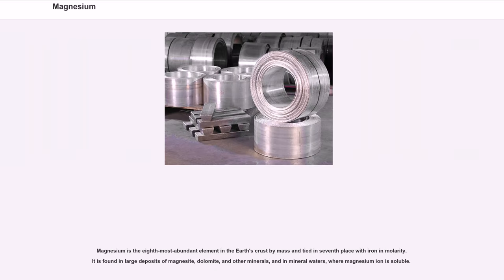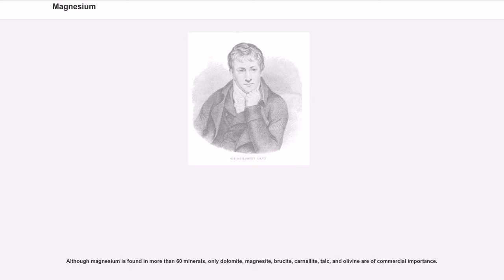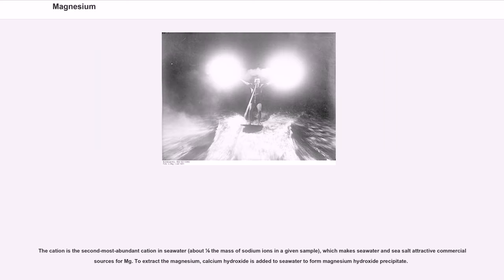Magnesium is the eighth most abundant element in the Earth's crust by mass. It is found in large deposits of magnesite, dolomite, and other minerals, and in mineral waters where the magnesium ion is soluble. Although magnesium is found in more than 60 minerals, only dolomite, magnesite, brucite, carnalite, talc, and olivine are of commercial importance. The magnesium cation is the second most abundant cation in seawater, about one-eighth the mass of sodium ions in a given sample, which makes seawater and sea salt attractive commercial sources for Mg.